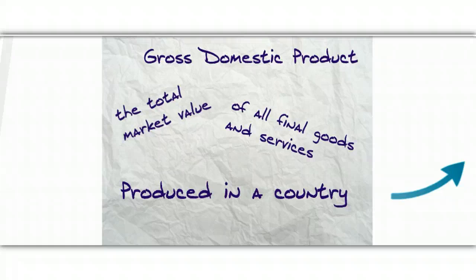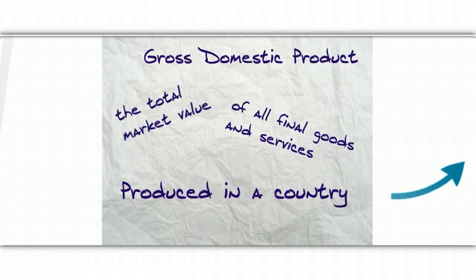I divided the definition into three parts for a reason, because each part is an important part of the whole. The first is the total market value. What this means is when we measure the GDP, we always measure it in terms of money — it will always be a dollar amount. We're adding up the value of everything that's been produced in a country, so we can't add up three apples plus five computers plus two cars and come up with a number that makes any sense. Instead, we have to convert them all to their monetary value, and then we can see what the value is of everything that we've created.